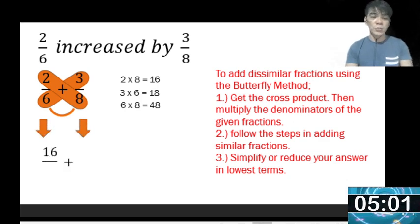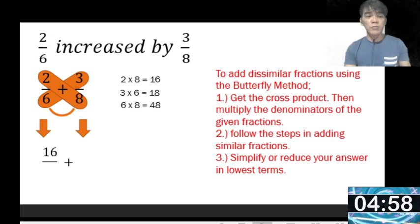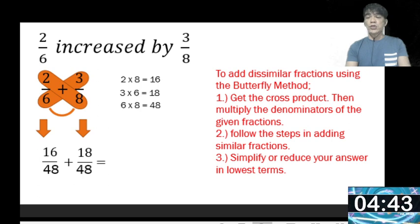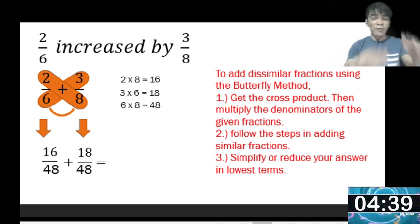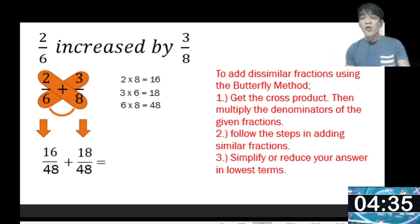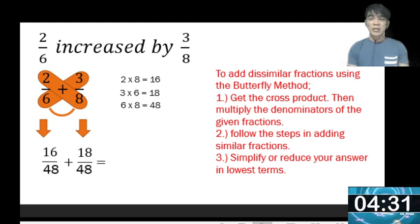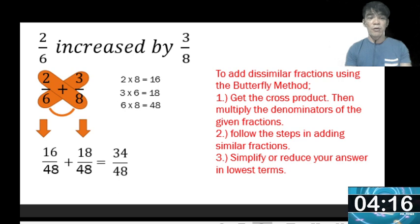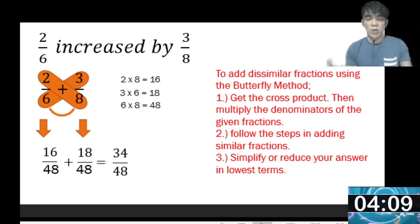The product of numerator 2 and denominator 8 (which is 16) becomes the numerator of the first fraction, and the product of denominators 6 and 8 (which is 48) becomes the denominator of both fractions. They are now similar fractions, so we can add them. Add the numerators: 16 plus 18 equals 34, then copy the denominator 48. But 34 over 48 is not in simplest form, so we need to reduce it.